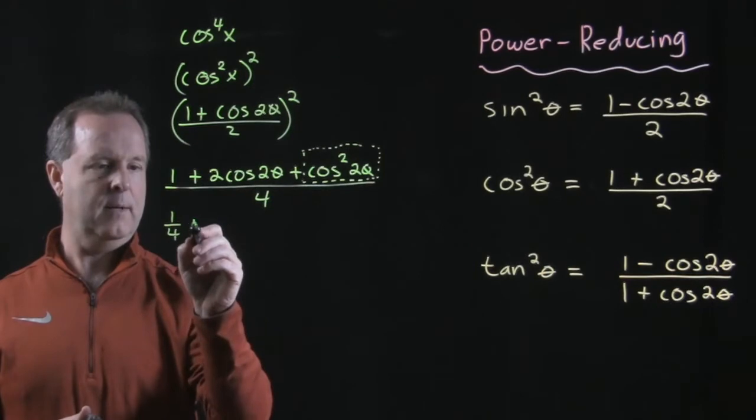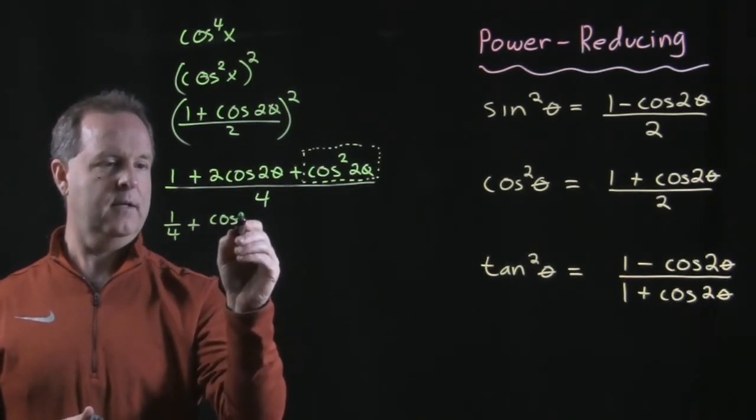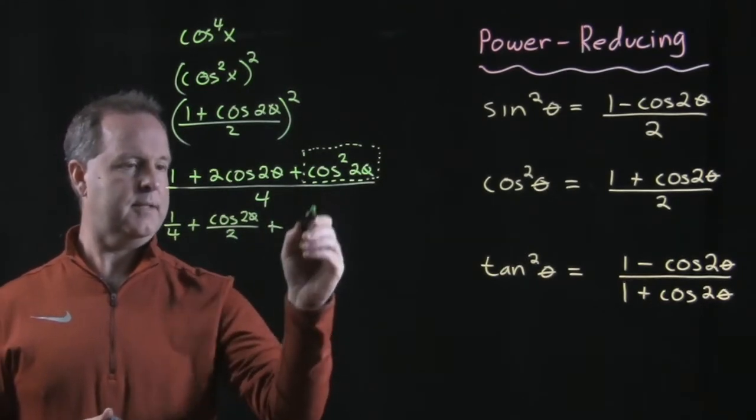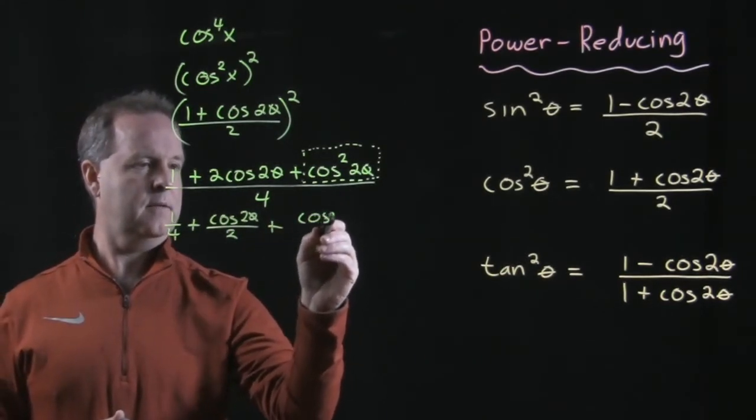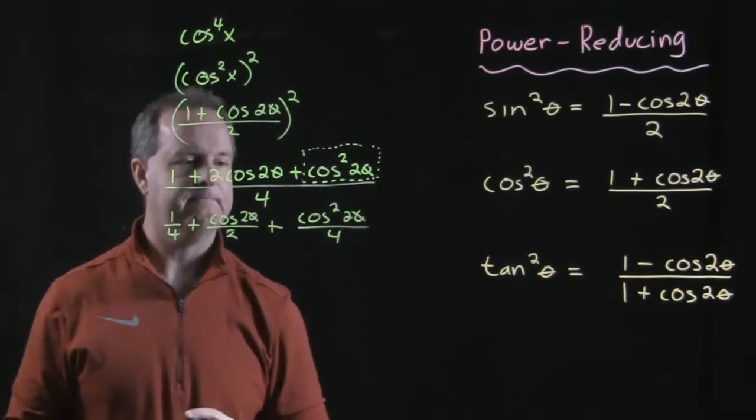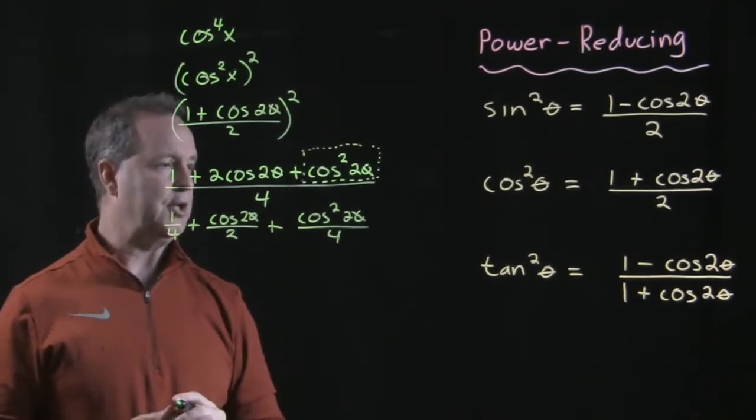So I'll have a 1 fourth plus 2 over 4 is a 1 half plus a cosine 2 theta all over a 2 plus the fun all over a 4. Don't know if I needed to do that but it was something I could do.